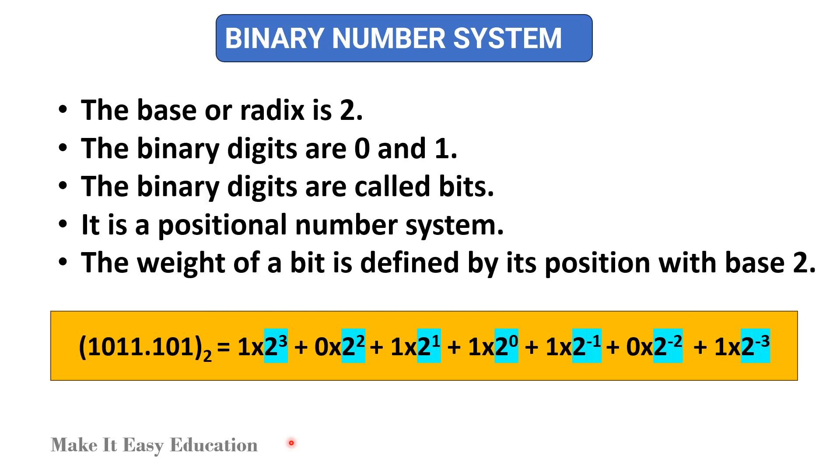Binary number system. The base or radix is 2. The binary digits are 0 and 1. The binary digits are called bits. It is a positional number system. The weight of a bit is defined by its position with base 2.